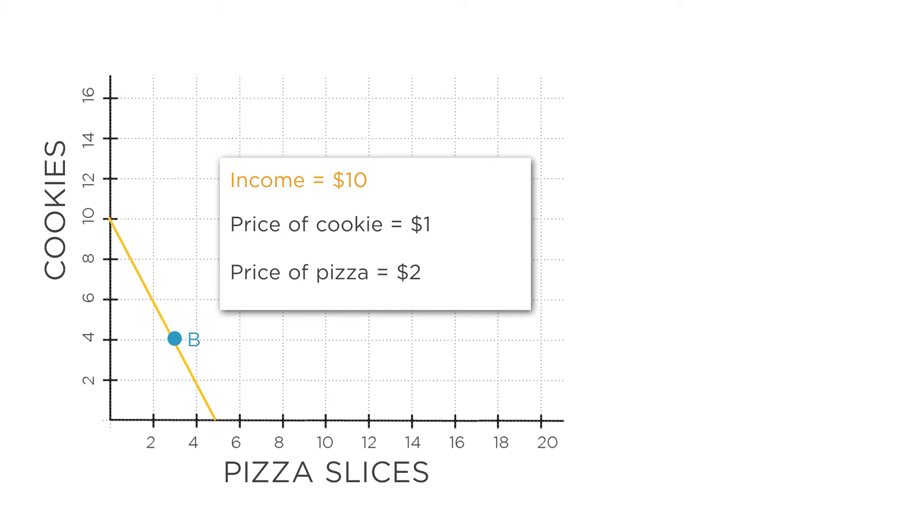How many fewer? That depends on the price of each good. In our example, one slice of pizza costs twice as much as one cookie. So to get one more slice of pizza, you have to give up two cookies. The opportunity cost of one slice of pizza in this example is two cookies.